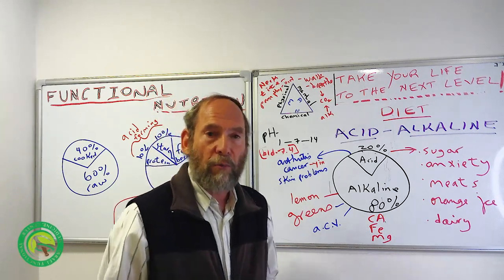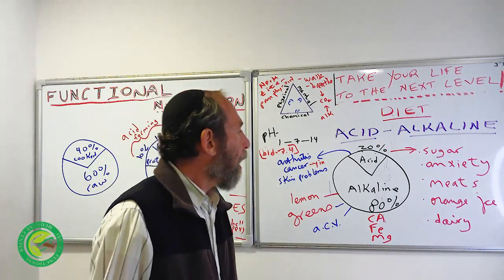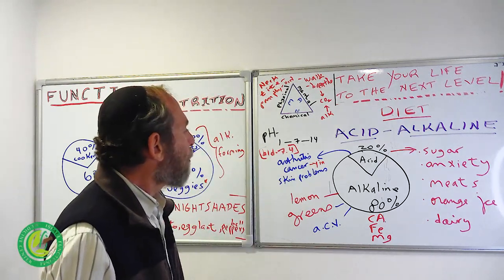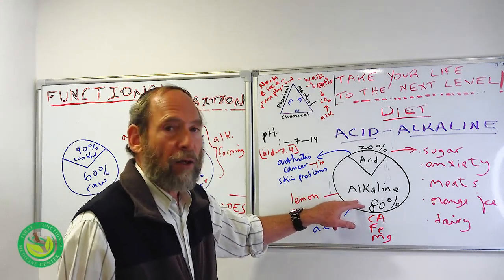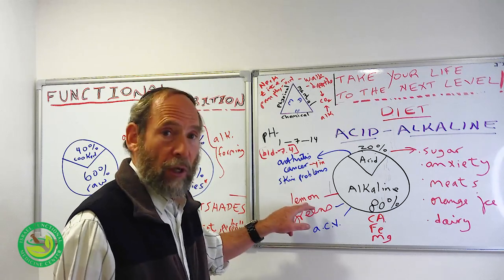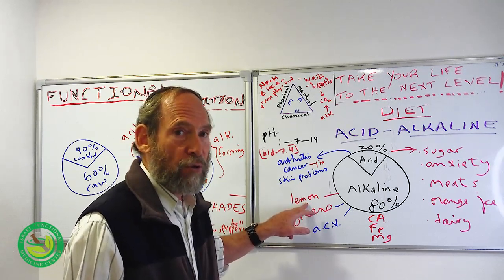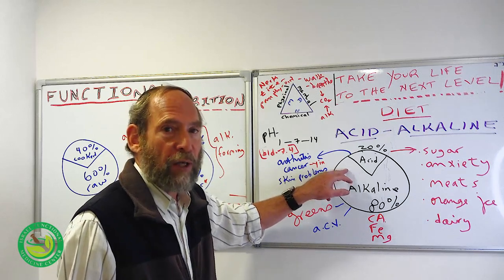There's a constant movement in our body to keep the blood at 7.4. Now, I have a few charts here. The chart says that basically we should be eating 80% alkaline foods or alkaline-forming foods. That's a little tricky and maybe some confusion, but I'll explain it. And 20% of our diet should be acid.